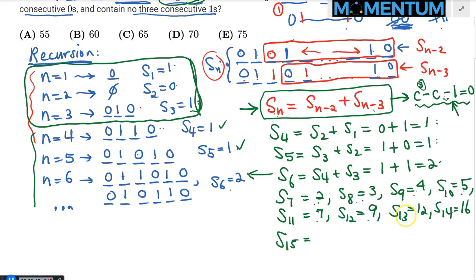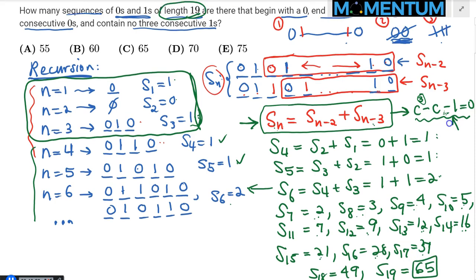S sub 14 is 9 plus 7, which is 16. This recursion is growing pretty slowly, which is nice for computational purposes. S sub 15 is 12 plus 9, which is 21. S sub 16 is 16 plus 12, which is 28. S sub 17 is 21 plus 16, which is 37. S sub 18 would be 28 plus 21, which is 49. And lastly, lo and behold, S sub 19 is 37 plus 28, and that is 65. That's the answer to this problem.